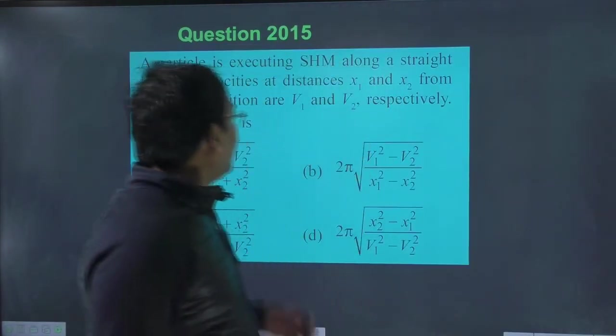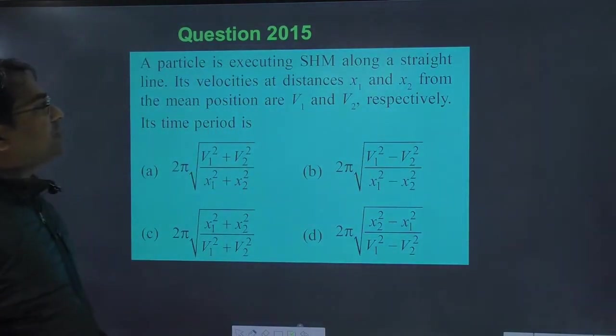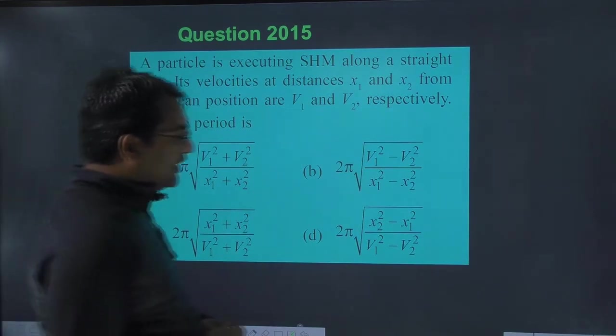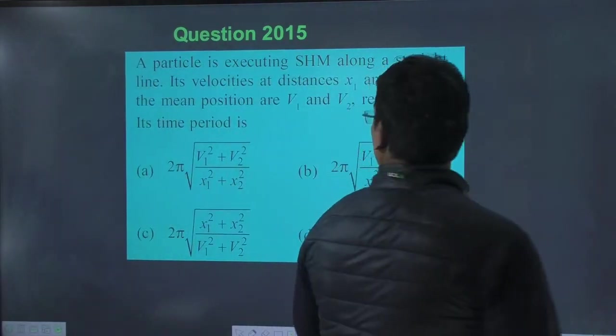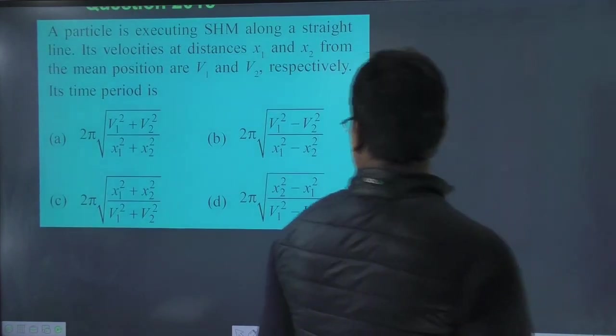Chalo. A particle execute simple harmonic motion along the straight line. Straight line ke along simple harmonic motion ho raha hai. Aur 2 alag alag position.